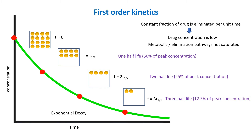The rate of elimination is proportional to the drug concentration because the system can process more drug as the concentration increases. For example, doubling the drug concentration doubles the elimination rate, or halving the concentration halves the elimination rate, as shown in the graph.